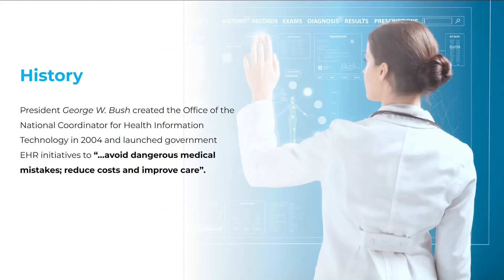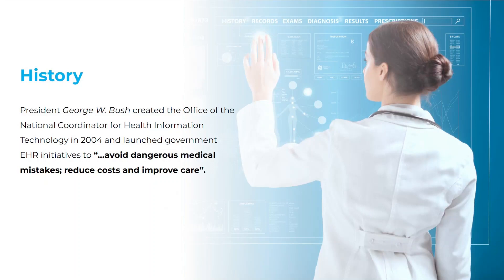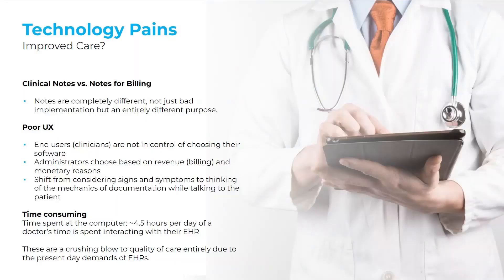The history of EHR was actually launched by President George W. Bush. EHRs did exist before — Epic's been around for decades — but the actual start of EHR requirements, meaning everyone must get an EHR, started in 2004 and continued into Obama's presidency in 2009 with more laws being passed. Bush created the Office of the National Coordinator, ONC, for health information technology. The stated goals were to avoid dangerous medical mistakes, reduce costs, and improve care.